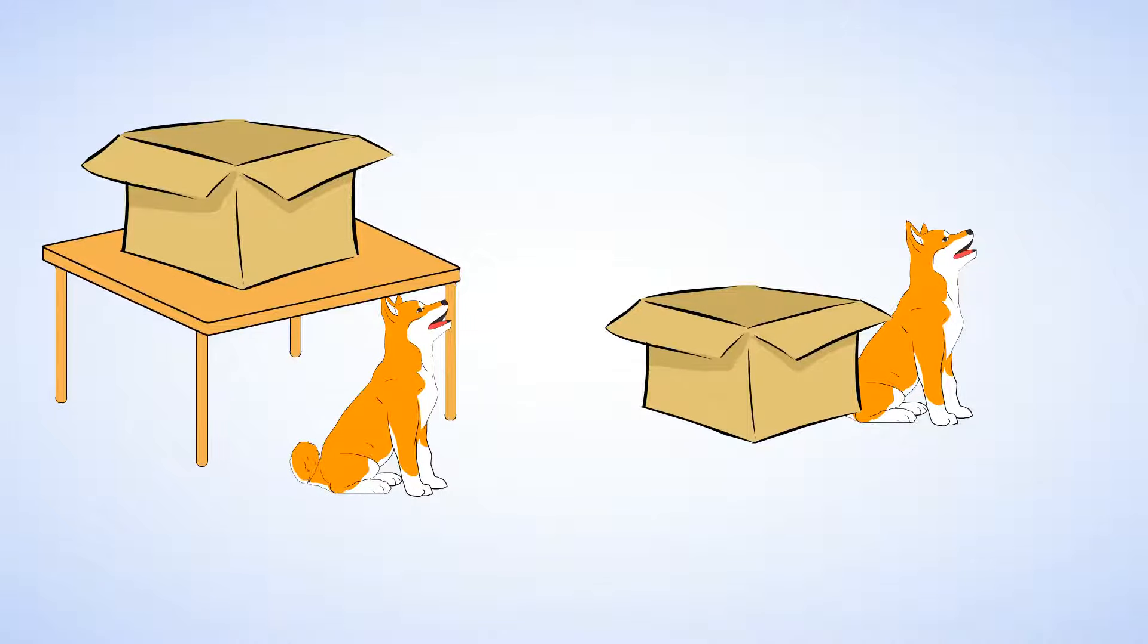Which picture shows the dog next to the box? Now, we just learned that in this picture, the dog is below the box, and so that's not it. Aha! This is the right picture. Here, the dog is next to the box. And the box is also next to the dog.